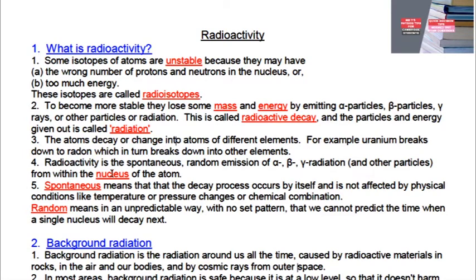When we say random, we mean that it is unpredictable as to which nucleus is going to decay next — we cannot predict the time when a single nucleus will decay. Spontaneous means that the decay process occurs by itself and is not affected by physical conditions, such as temperature, pressure, or chemical combination.